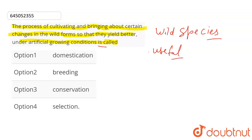The options are: A) Domestication, B) Breeding, C) Conservation, D) Selection. Domestication means wild species undergo changes to become useful under artificial conditions.